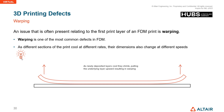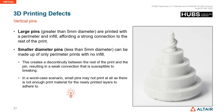The first layer is already printed and cooling down, while another layer is being printed on top of it. Due to this temperature difference and temperature gradient, dimensions change at different speeds, which can cause a warping defect.